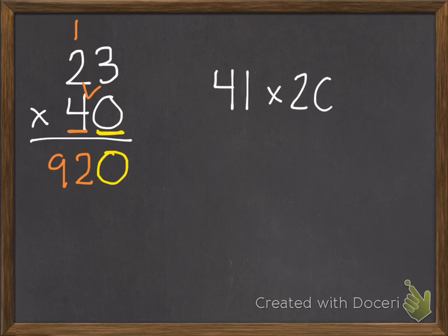If it's written sideways like this, we can use our zero trick we learned last chapter, and multiply the non-zero part. 41 times 2 is 82. And then we have one zero. So we know we're going to have one zero here after the 82. So we get 820. So either of these two strategies will work.